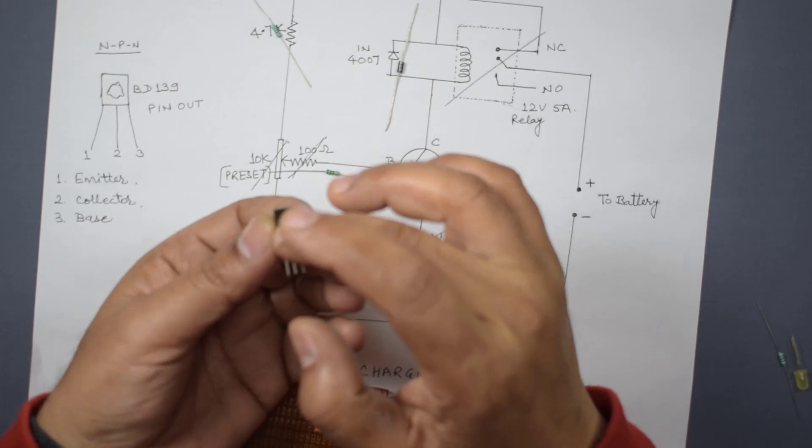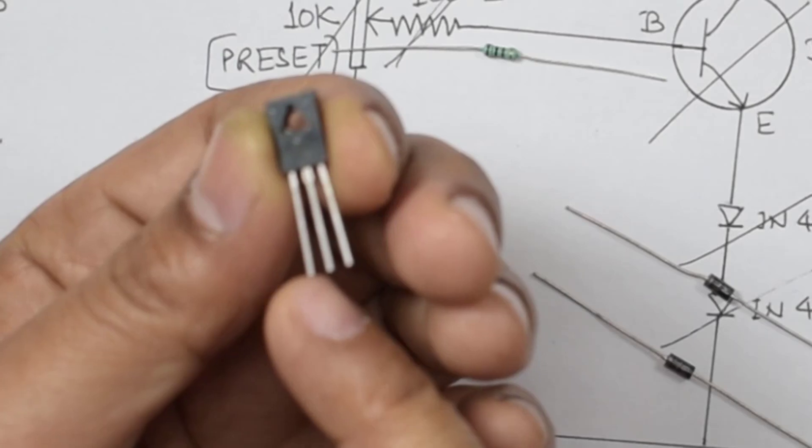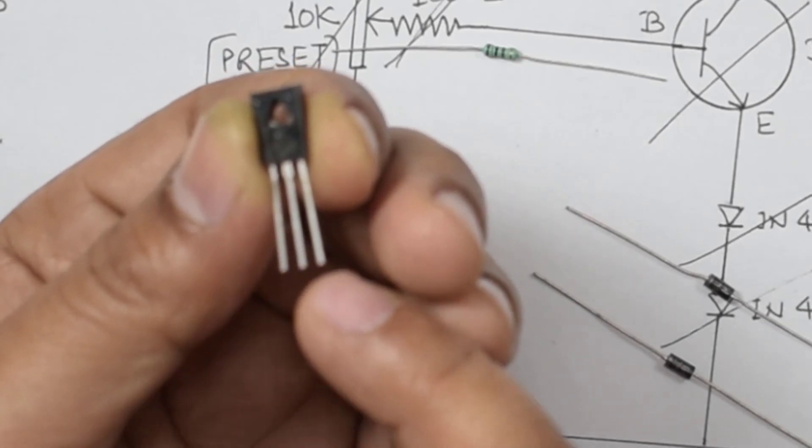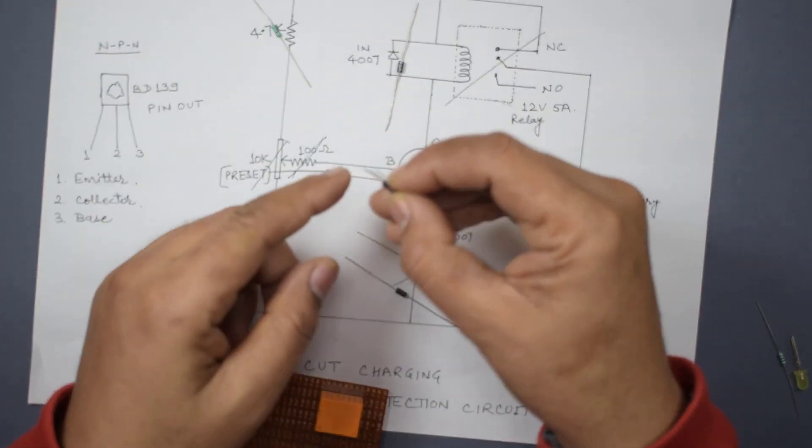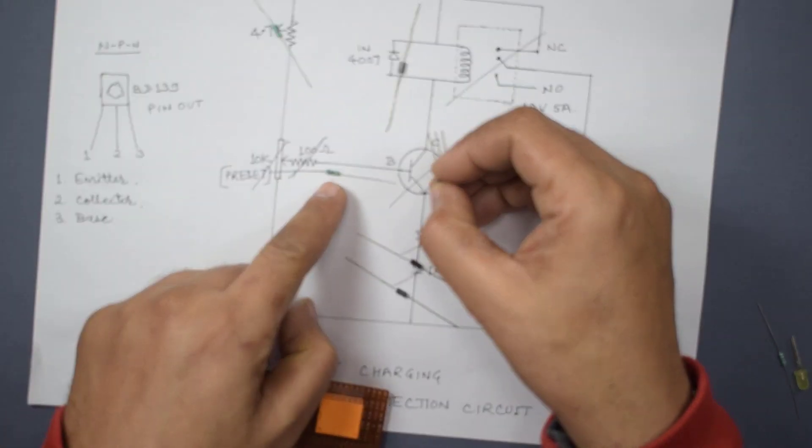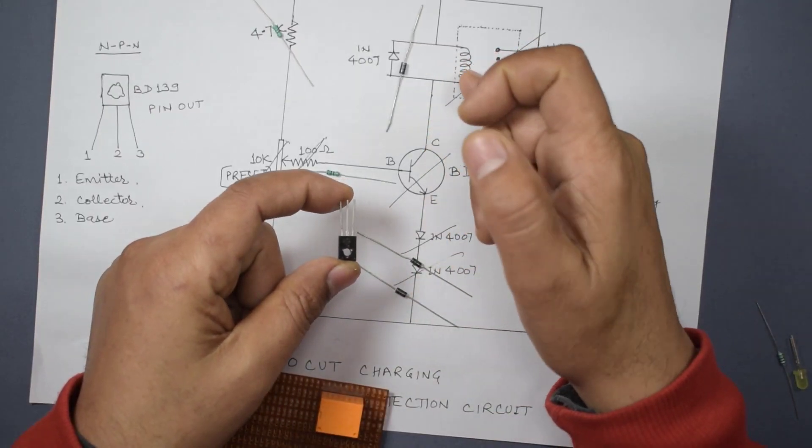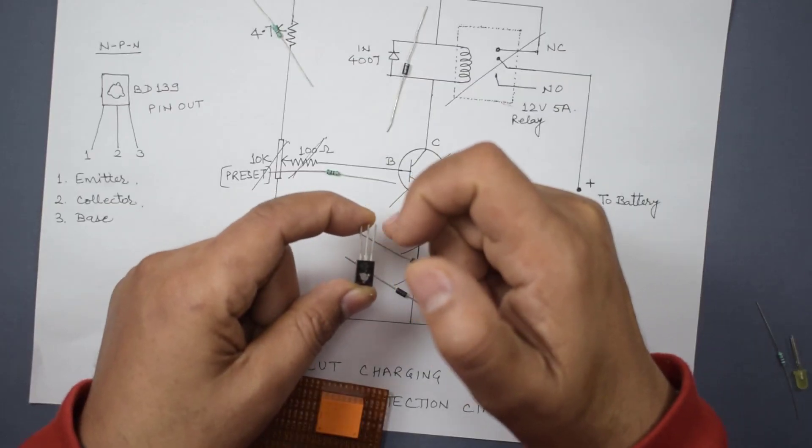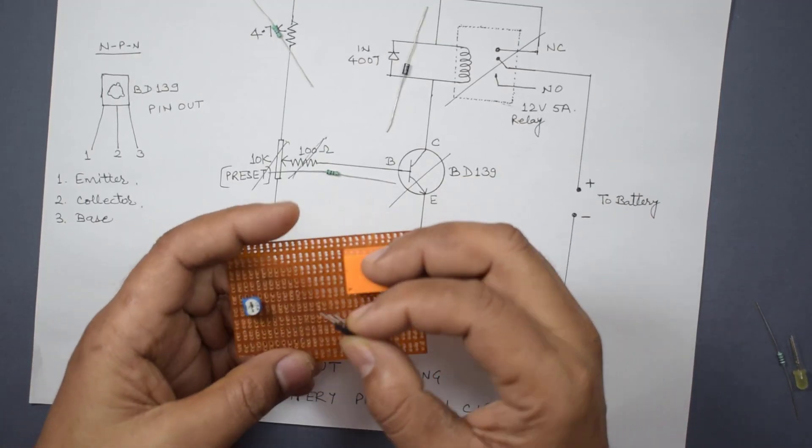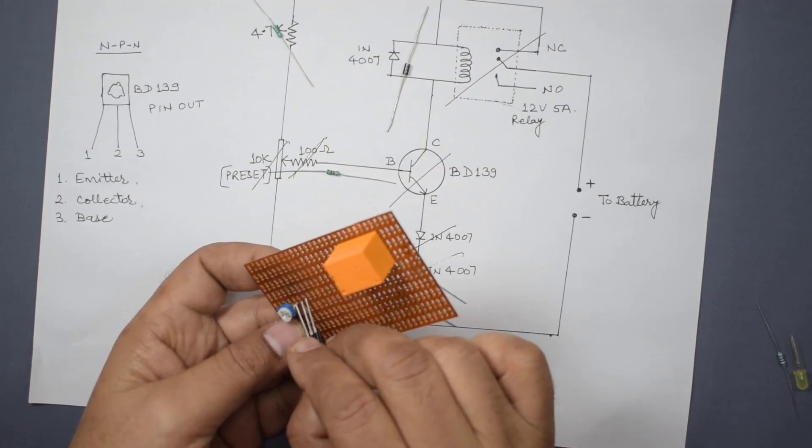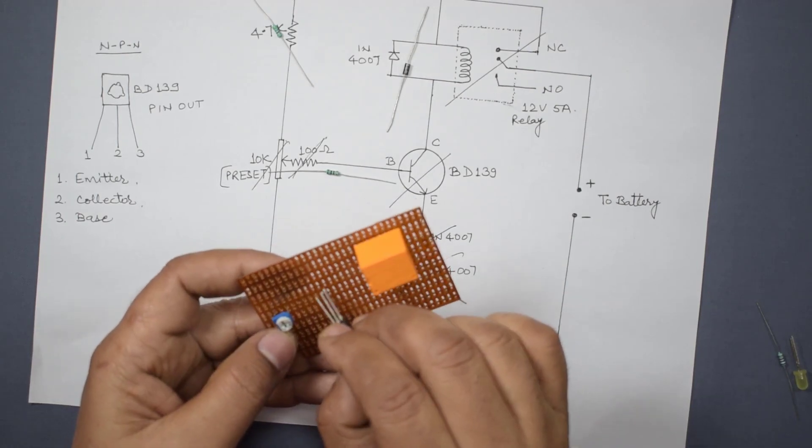One thing I would like to tell you more: in this transistor BD139, the first pin is emitter, second pin is collector, and third pin is base. I have to connect in this manner so that this base should be connected to the 100 ohm resistor, middle leg that is collector should be connected to the relay, and third one is emitter that should be connected to the diodes. The middle point of this variable resistor should be connected to the base of BD139.